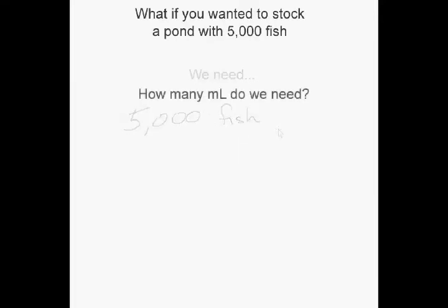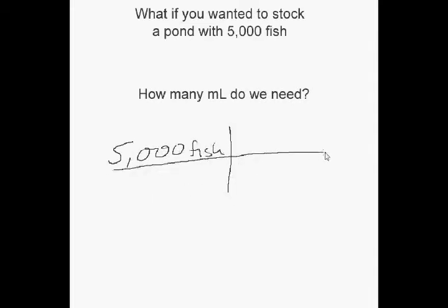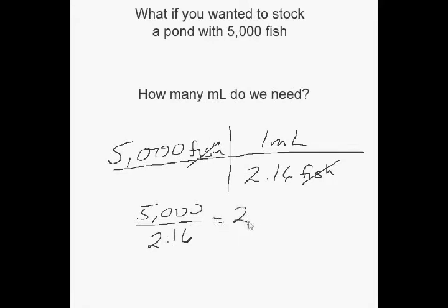First, we know 2.16 fish will displace 1 milliliter. We need 5,000 fish to stock the lake. How many milliliters do we need to displace? We calculate this by dividing the number of fish we need, 5,000, by the number of fish needed to displace 1 milliliter, 2.16. We cancel our units and are left with 2,315 milliliters that are displaced by 5,000 fish.